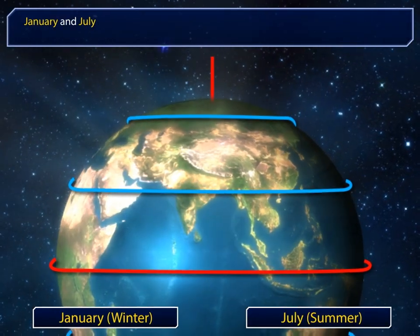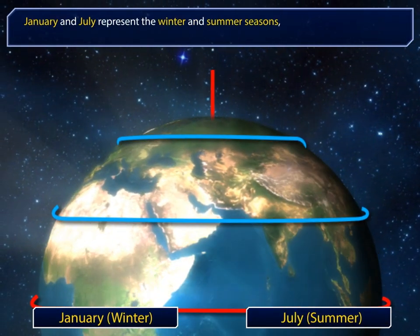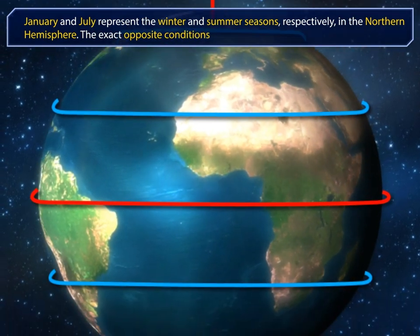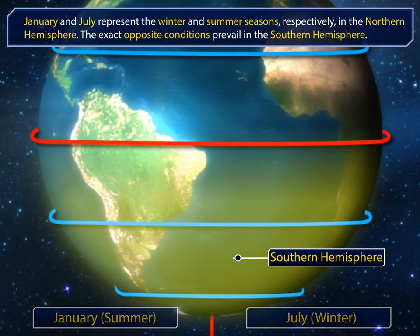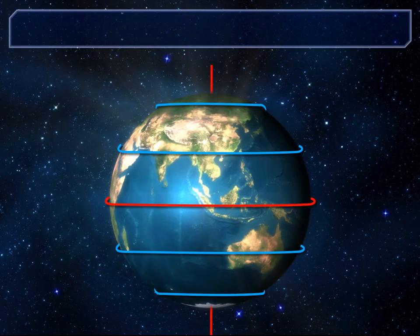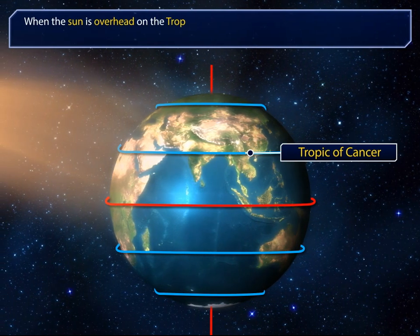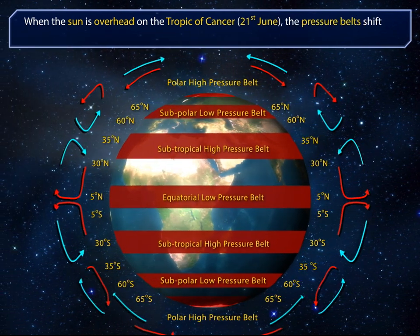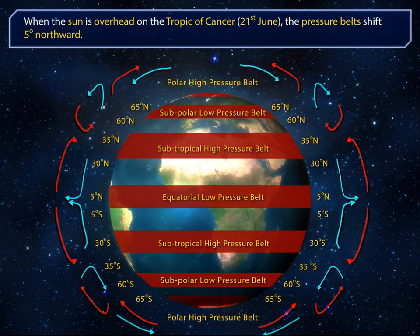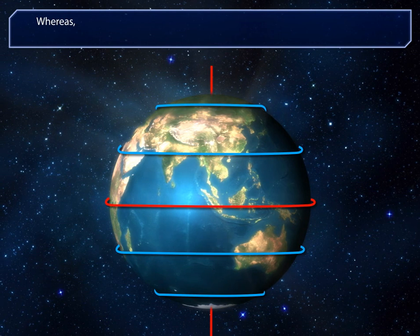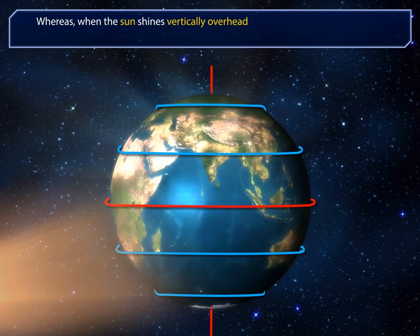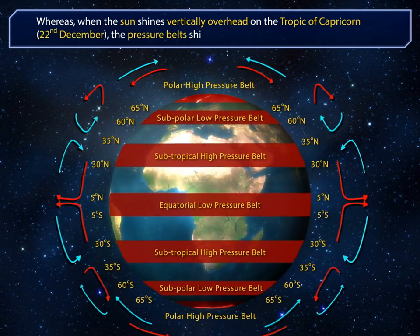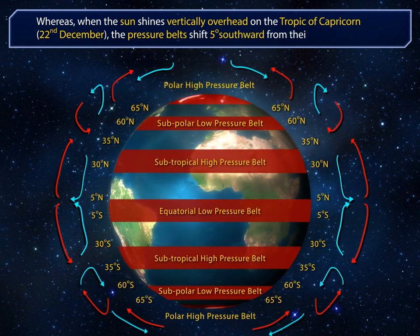January and July represent the winter and summer seasons respectively in the Northern Hemisphere, while the exact opposite conditions prevail in the Southern Hemisphere. When the sun is overhead on the Tropic of Cancer on 21st June, the pressure belts shift 5 degrees northward. Whereas when the sun shines vertically overhead on the Tropic of Capricorn on 22nd December, the pressure belts shift 5 degrees southward from their original position.